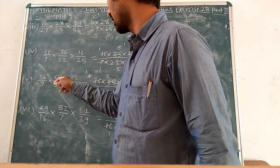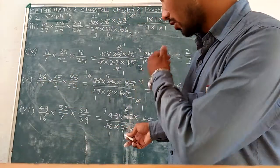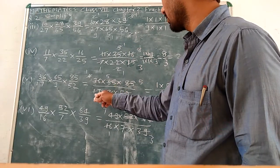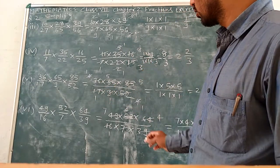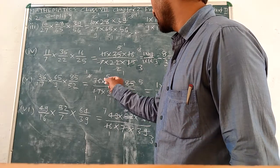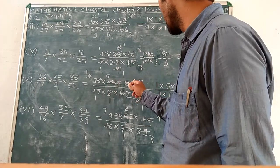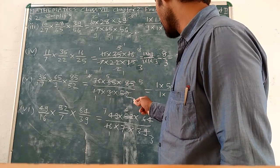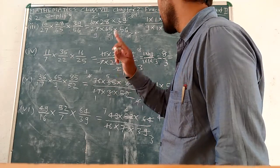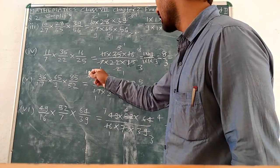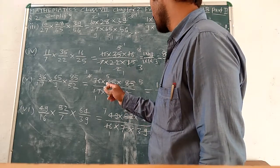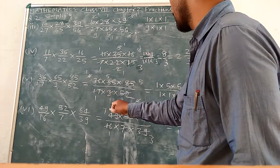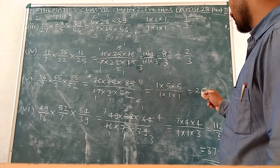36 upon 17 multiply 65 upon 9 multiply 85 upon 52 is equal to product of numerator 36 multiply 65 multiply 85 upon denominator 17 multiply 9 multiply 52. 9 goes into 36, 17 goes into 85, 35 goes into 52 and 65, 4 goes into 4. 1 multiply 5 multiply 5, so this is 25 upon denominator.